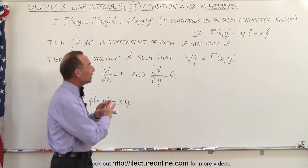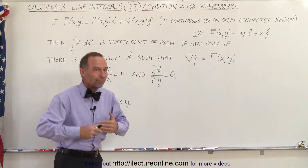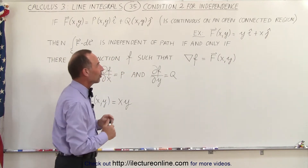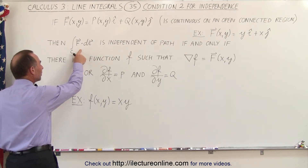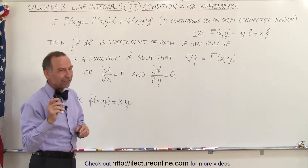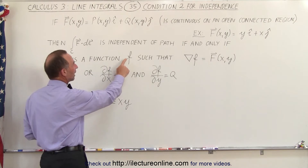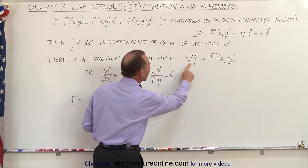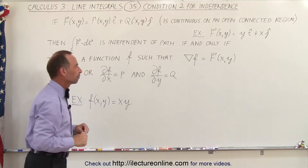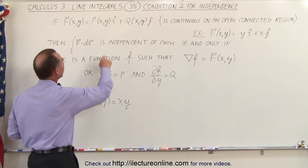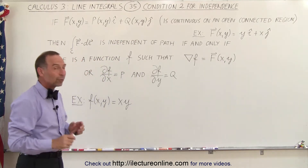If that vector field is continuous on an open connected region — and that's of course mathematical language to ensure all conditions are correct — then this line integral will be independent of path if and only if there exists a function, let's call it f, such that the gradient of that function equals this vector field, or specifically equals the function P in the i-direction and function Q in the j-direction.